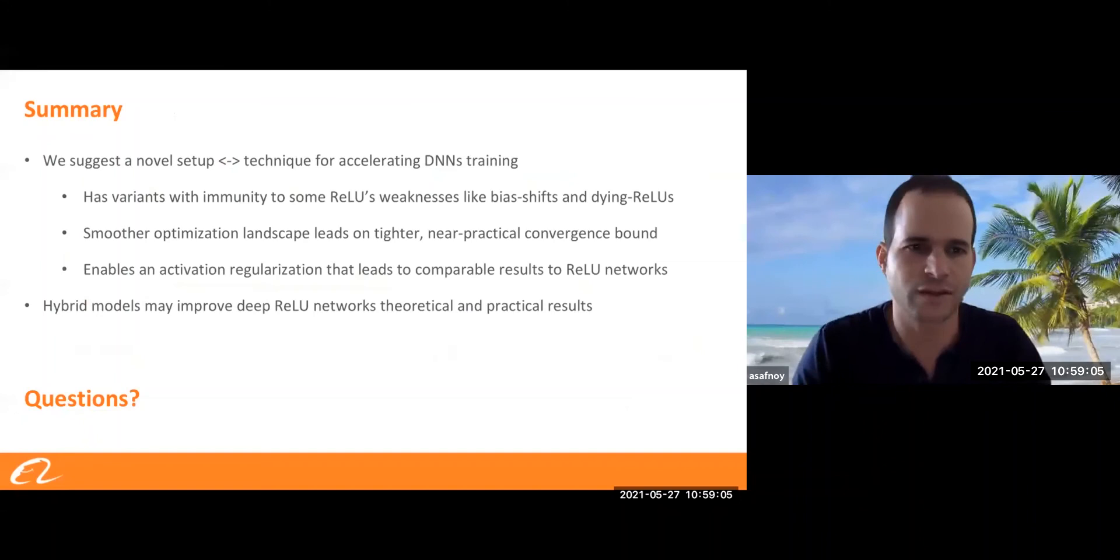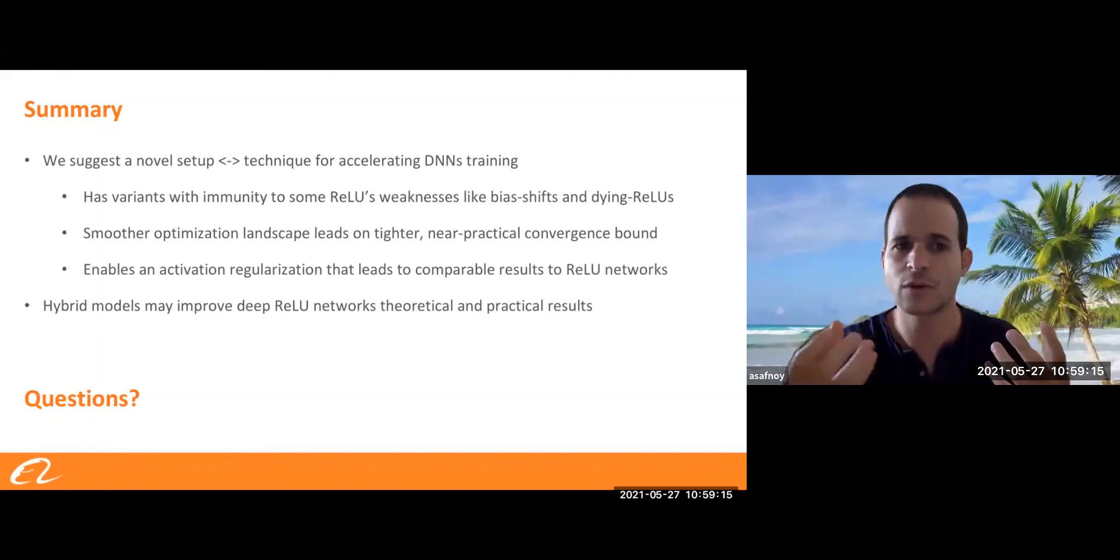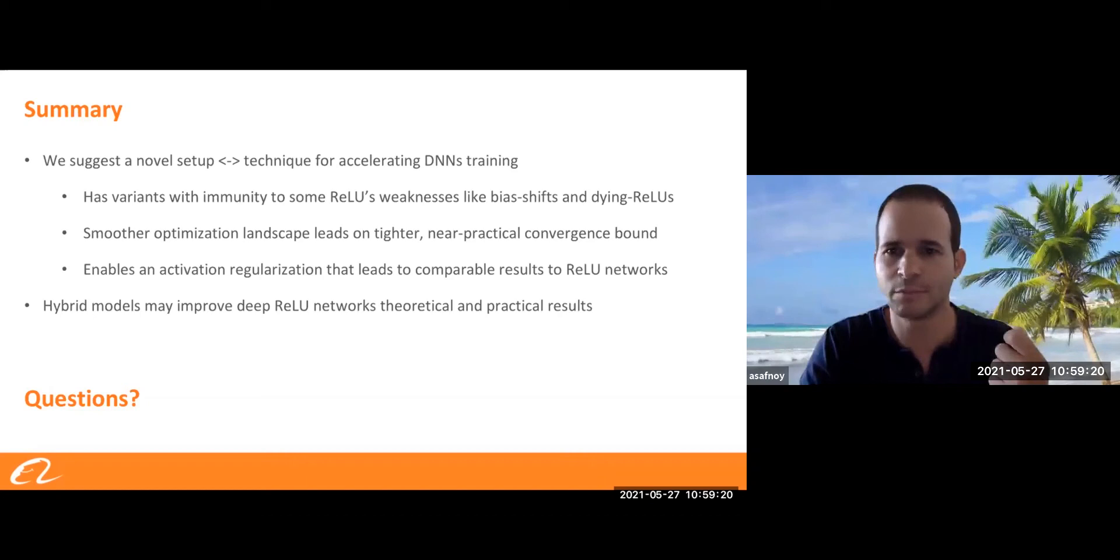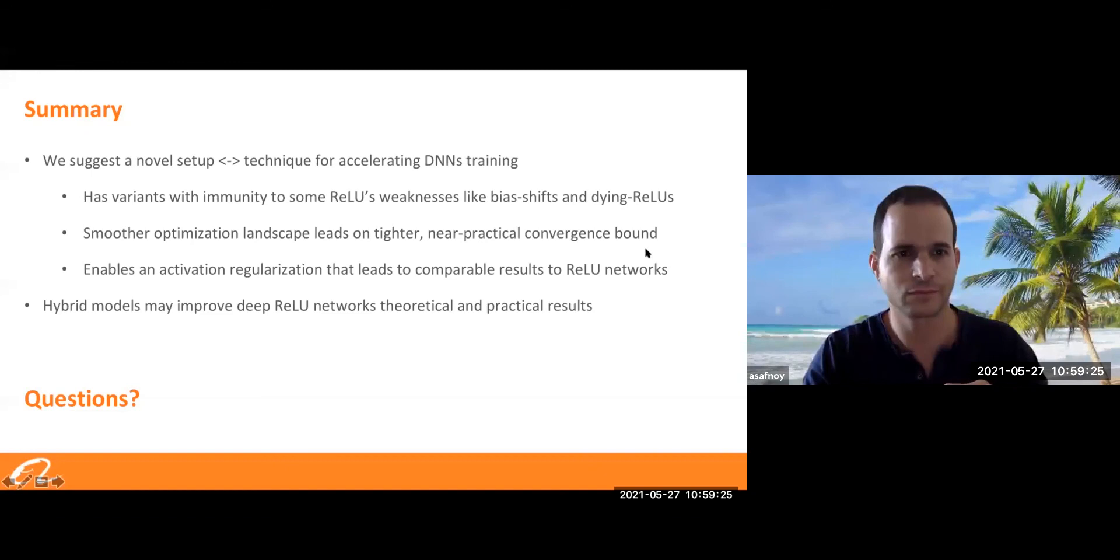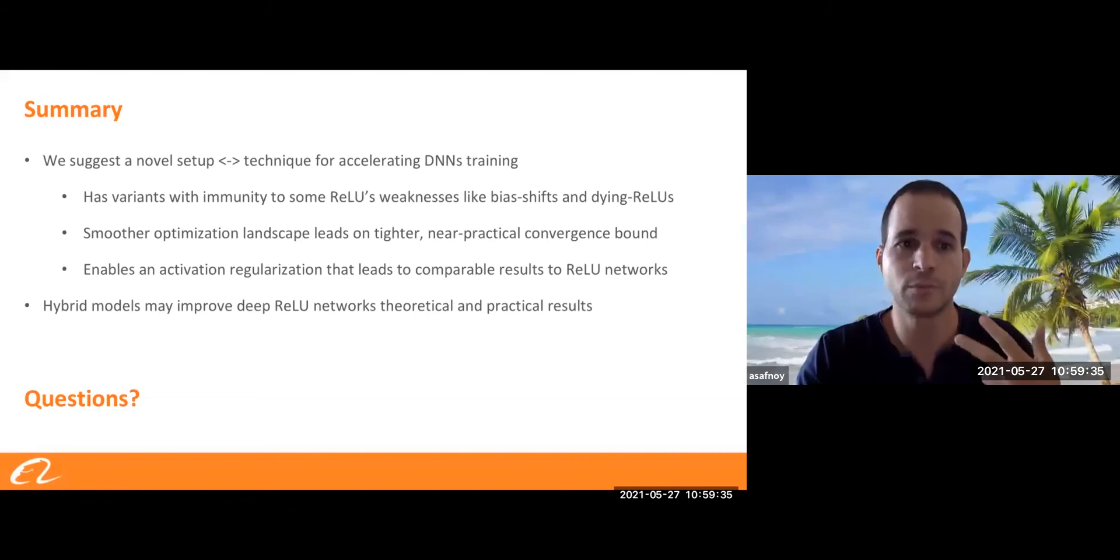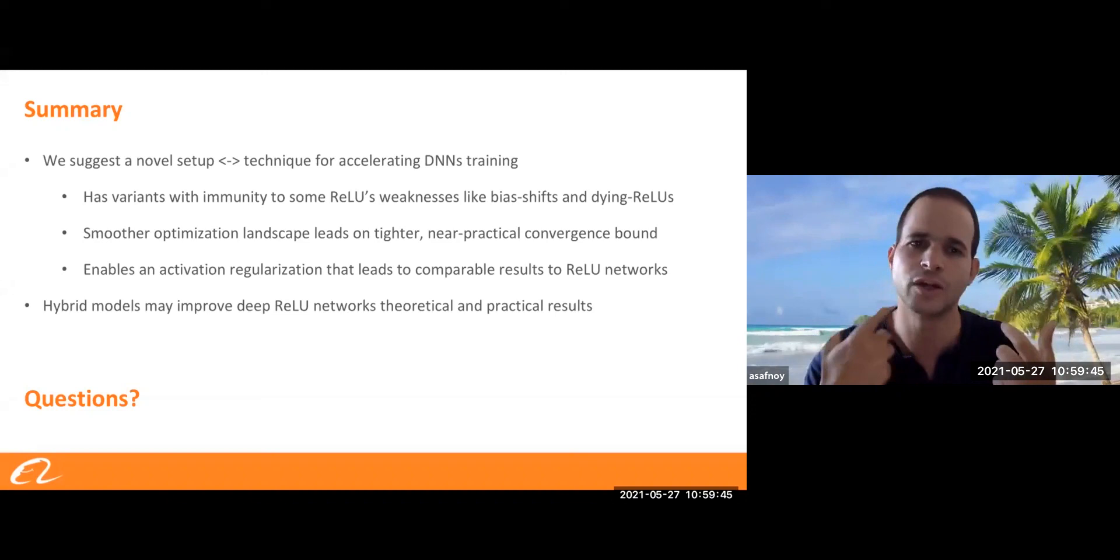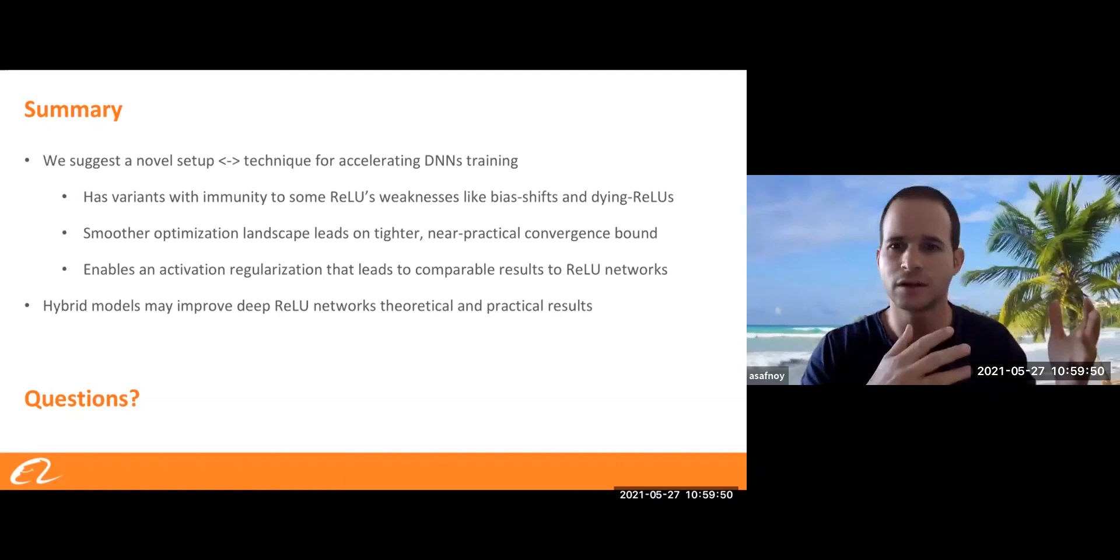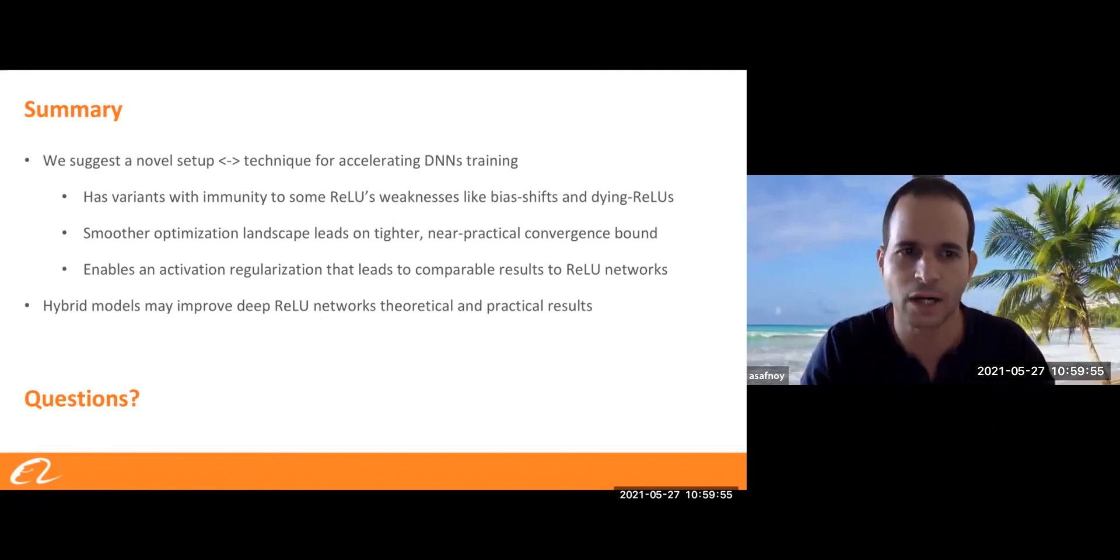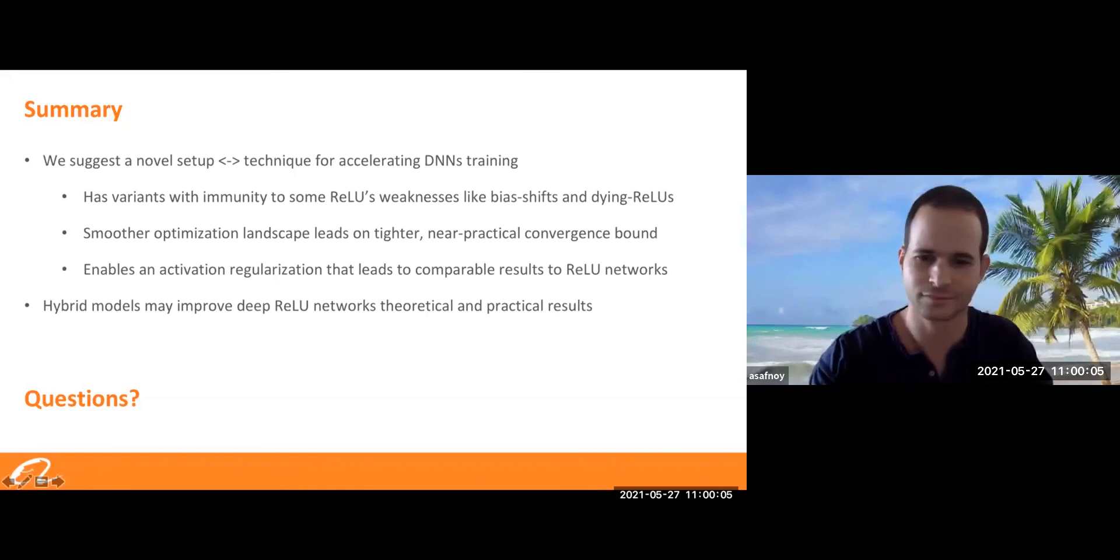So I will summarize. We suggest a novel setup. This is the G-ReLU. And this is like a family of models. ReLU, other kind, some kind of G-ReLU with or without injected noise. One variant, which is simple, leads to semi-practical convergence bound. Larger, but not by much from what we do in practice, mild over-parameterization. A regularized variant, getting us actually good empirical results. And also we got the hybrid models that take maybe the best of both worlds from ReLU and G-ReLU. And we wish that this can be taken forward and improve the empirical result of ReLU and also the theoretical bounds. Thank you for listening.